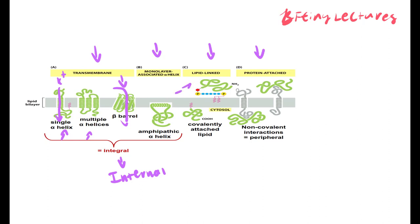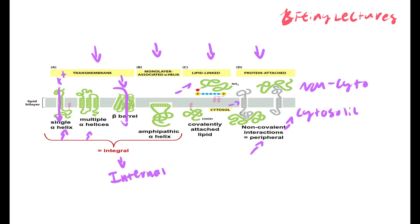Lipid-linked proteins and protein-attached peripheral proteins are found on the surface of the cell membrane in the cytosolic portion. These peripheral proteins use interactions and are close to the cell membrane, sometimes with a transmembrane portion attached.